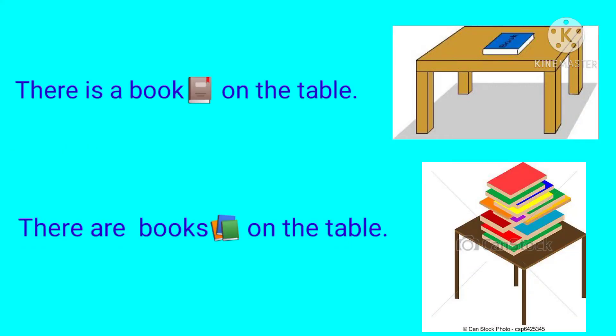Children, look at these examples. 'There is a book on the table.' Here, 'Book' is a singular noun because there is only one book on the table. The next example is, 'There are books on the table.' Here, 'Books' is in plural form because there are many books on the table. So: Book → Books.